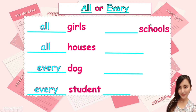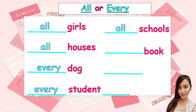Next. Schools. Singular or plural? It's plural. So what is the answer, all or every? The answer is all. All schools. Next. Book. Singular or plural? It's singular. So what are we going to use, all or every? Every. Every book.